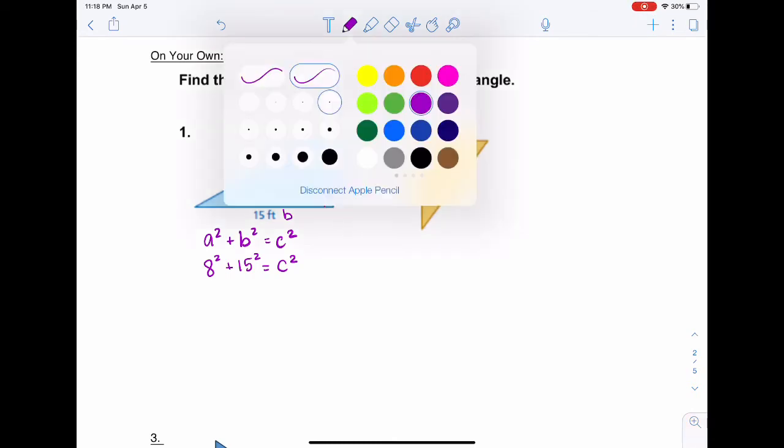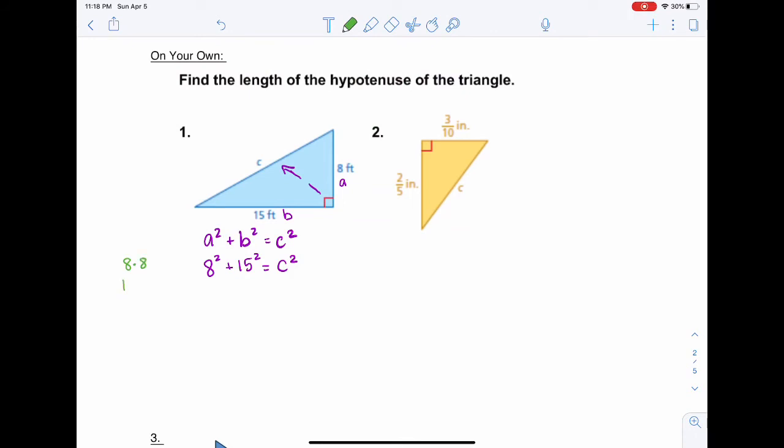Now I'm going to have 8 squared plus 15 squared equals C squared. De nuevo, 8 squared es solamente 8 por 8 and 15 squared es 15 por 15. So my 8 squared is 64 and 15 squared, 225. You add these up and you get 289 equals C squared. Now the only way to cancel that is to take the square root. That cancels. Again, on my phone, I'm going to put 289 and then I'm going to look for that square root button. Hit that and you should get 17 is side C.